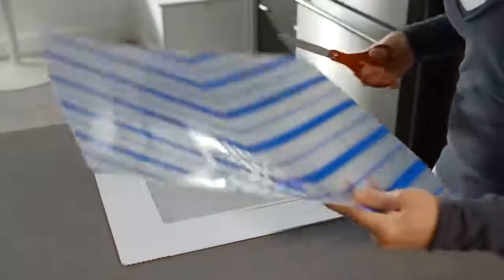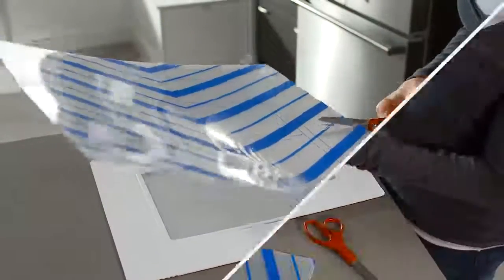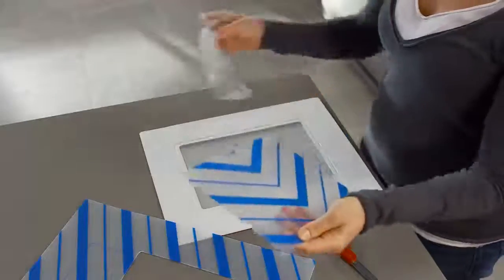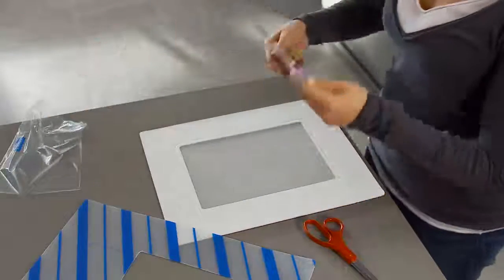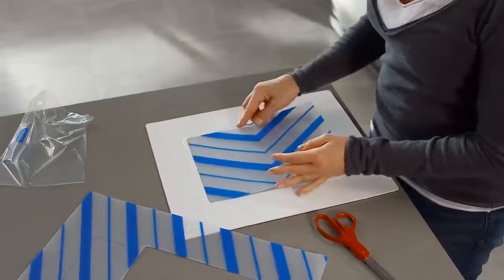Use scissors to cut along the corresponding outline on the liner. Peel off and discard the trimming grid, line up the liner in the center of the mat, and gently press to smooth.